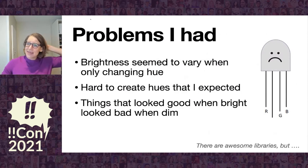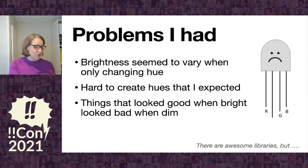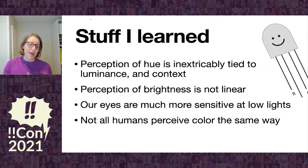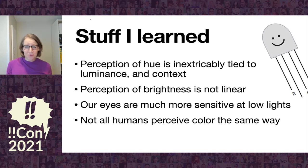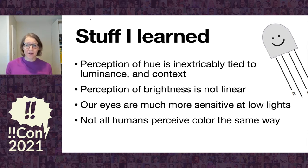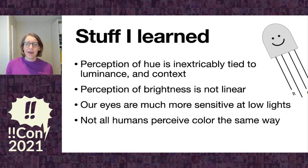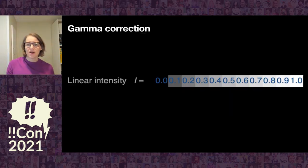So back to the problems I had: brightness seemed to vary when only changing the hue; it was hard to create the hues I expected; and things that looked good when bright looked bad when dim. What I learned is that perception of hue is tied to luminance and context and you cannot disentangle those. Our perception of brightness is not at all linear — our eyes are much more sensitive at low lights because of the cones — and not all humans perceive color the same way.